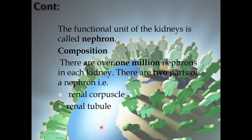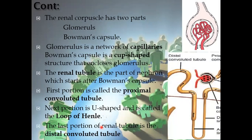The renal corpuscles have two parts: the glomerulus and the Bowman capsule — a cup-shaped structure. The glomerulus is a network of capillaries. The diameter of the afferent arteriole entering the glomerulus is larger compared to the efferent arteriole leaving it. The renal tubule is the second part of the nephron, starting after the Bowman capsule. The first portion is the proximal convoluted tubule, followed by the loop of Henle, and then the distal convoluted tubule.